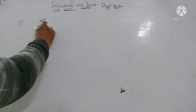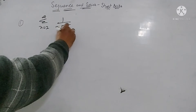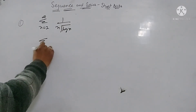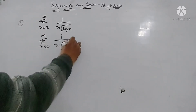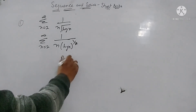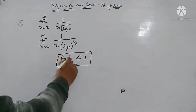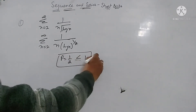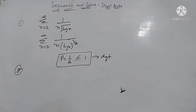Question: summation n varies from 2 to infinity of 1 upon n·√(log n). This means summation n varies from 2 to infinity of 1 upon n·(log n)^(1/2). Here P is equal to 1/2, which is less than 1. So this series is divergent — no further work needed.